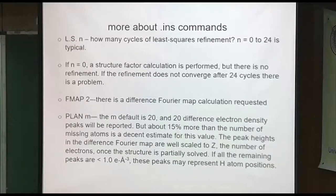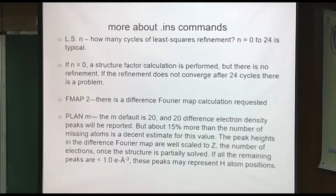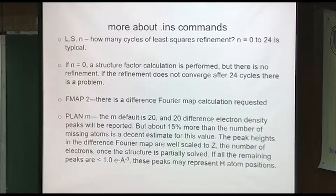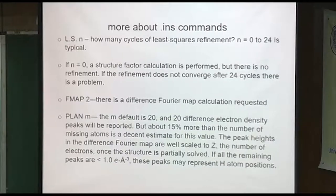If you put in FMAP 2, a difference map is going to be calculated. There are other FMAP choices: 3 is just a Fourier calculation without the difference. You can look at the SHELX cards to see the different options. The most common is FMAP 2 — that usually gives you the best output you can interpret. And PLAN M specifies how many Q peaks you're going to get. They'll be listed at the end of the RES file in order from strongest to weakest. The default is 20; if you want 50, just say PLAN 50.